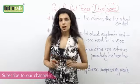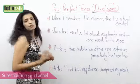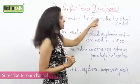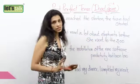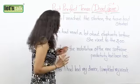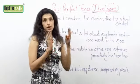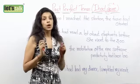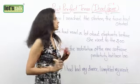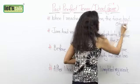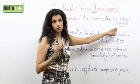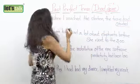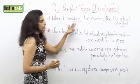Now let's learn how to use the past perfect tense. If I make a sentence saying, 'When I reached the station, the train had started' — now there are two things happening: reaching the station and the train starting. But one action happened first, then another action happened. So when you want to say which action happened first, you use the past perfect tense, because this happened first and after this there was another action — use a simple past tense.